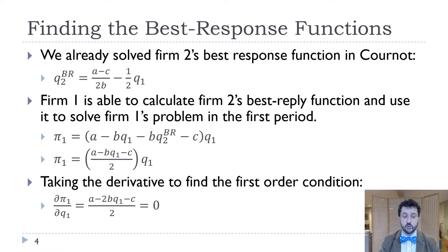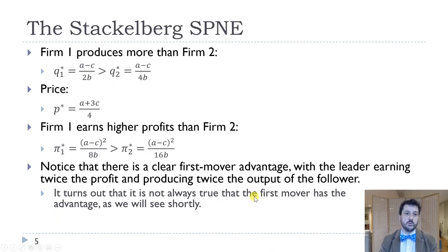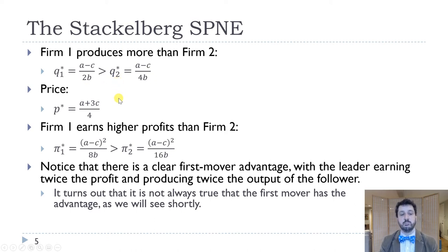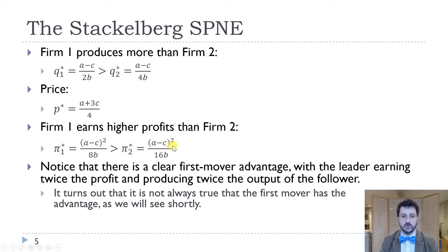We solve for Q1* and plug it into firm two's best response to get Q2*. Q1* = (A − C)/2B and Q2* = (A − C)/4B. Adding them gives market output Q*, and plugging into the inverse demand curve gives P* = (A + 3C)/4. Profits differ because the firms produce different amounts: firm one's profit π1* = (A − C)²/8B, and firm two's profit π2* = (A − C)²/16B.